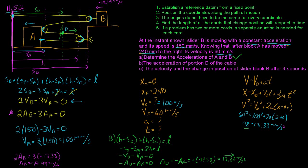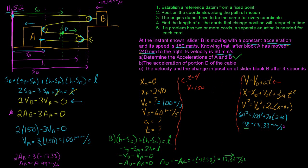Part C asks for the velocity and change in position of slider B after four seconds. Using V = V₀ + a·t with initial velocity of B = 150 mm/s and aB = −19.99 mm/s²: V = 150 + (−19.99)(4) = 70.04 mm/s. Since this is positive, at four seconds slider B's velocity is directed to the right.